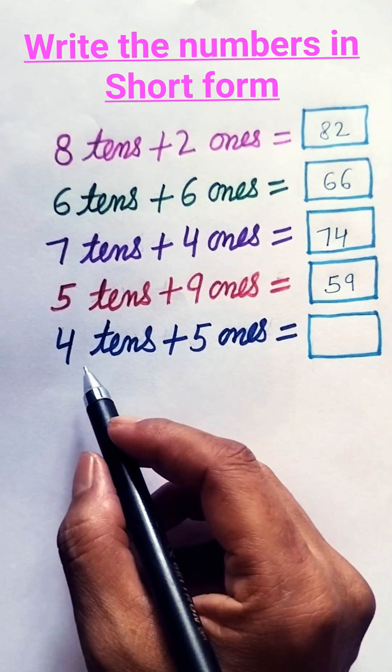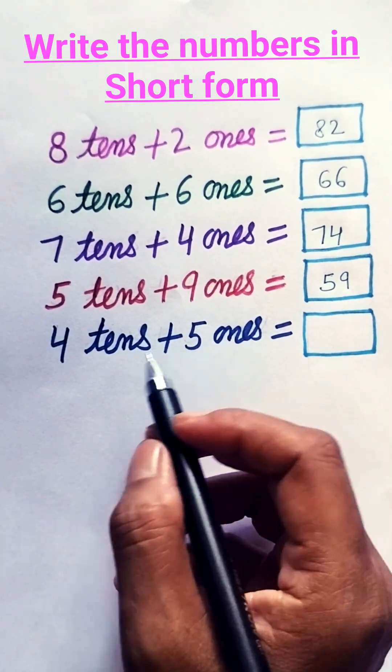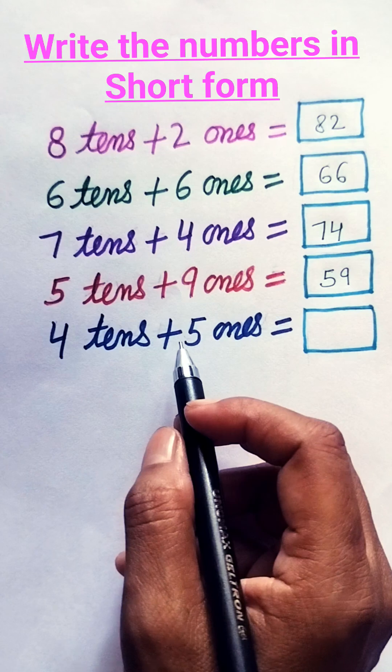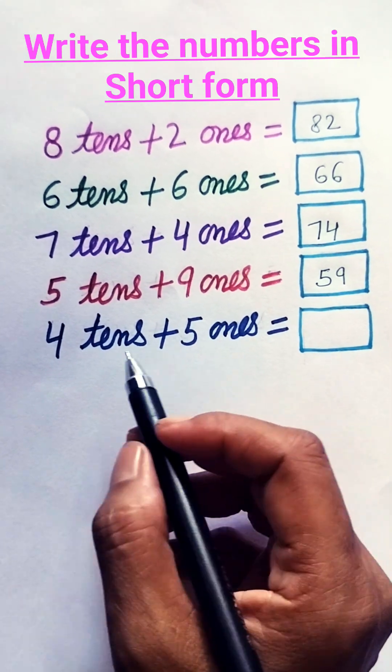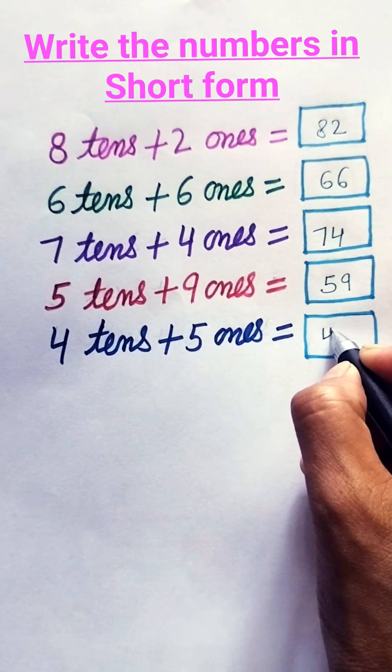Last, 4 tens plus 5 ones. 4 tens means 40, plus 5 ones means 5. 40 plus 5, 45.